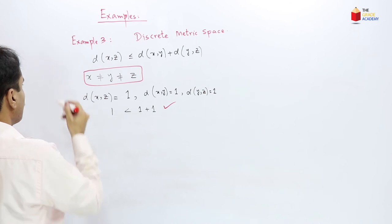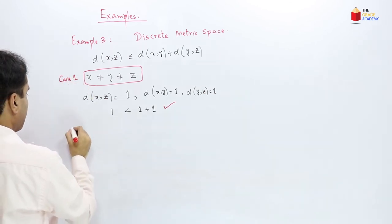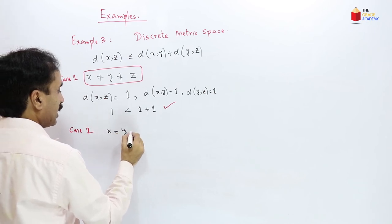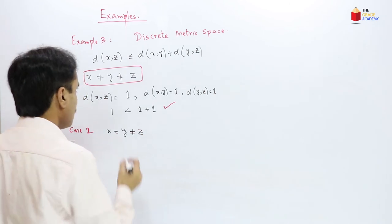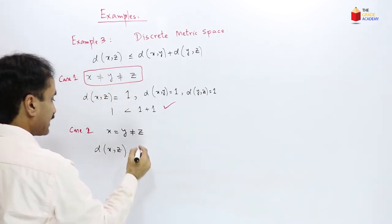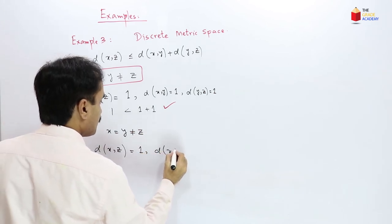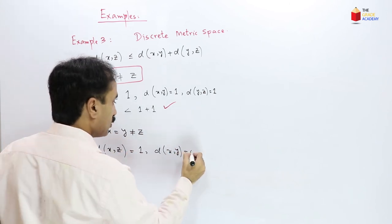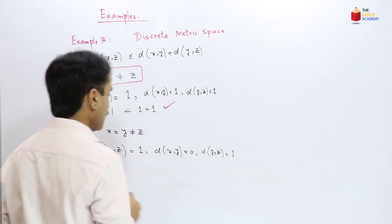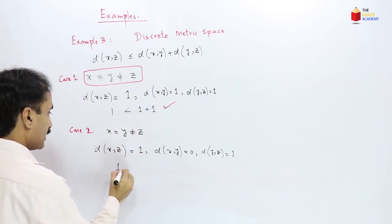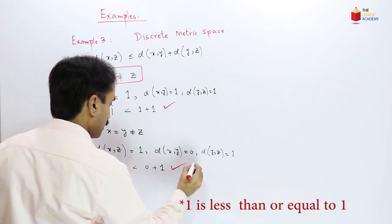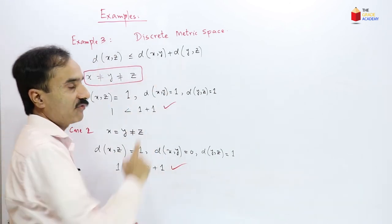Now we consider case 2: x = y but y ≠ z. So x and z are also not equal, meaning d(x,z) = 1. Since x = y, d(x,y) = 0. Since y ≠ z, d(y,z) = 1. So here 1 ≤ 0 + 1, which is true. For this case also, the triangular inequality is satisfied.